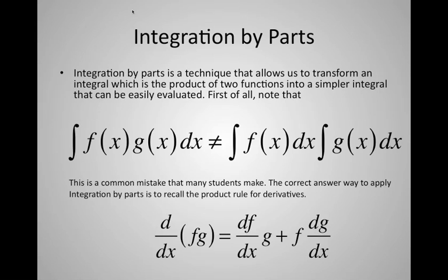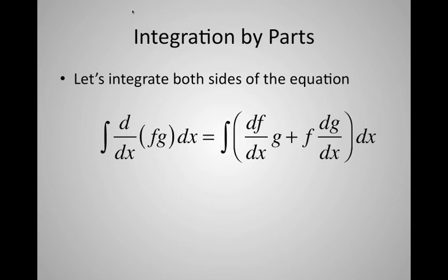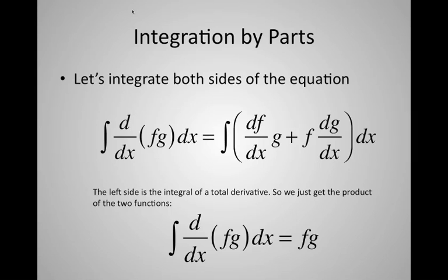The product rule is: d/dx(f·g) = (df/dx)·g + f·(dg/dx). If you integrate both sides, on the left you get the integral of d/dx(f·g), and on the right you get the integral of (df/dx)·g + f·(dg/dx). The left side is just a total derivative, so the integral of d/dx(fg) is just f times g.